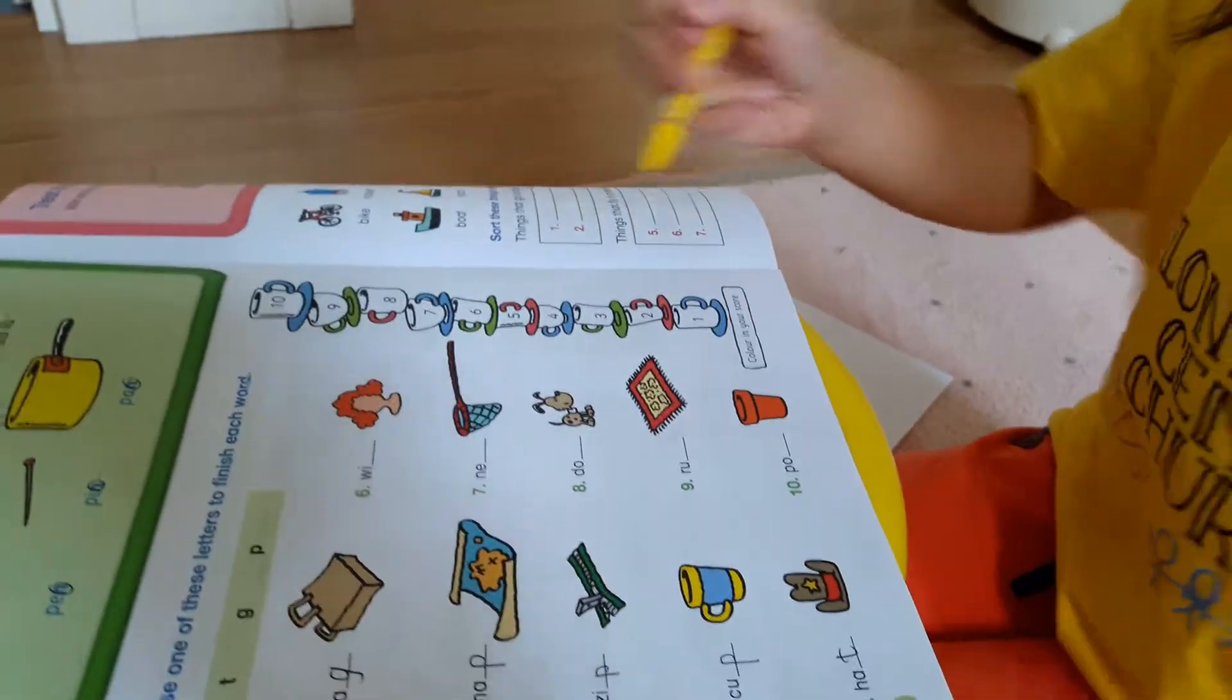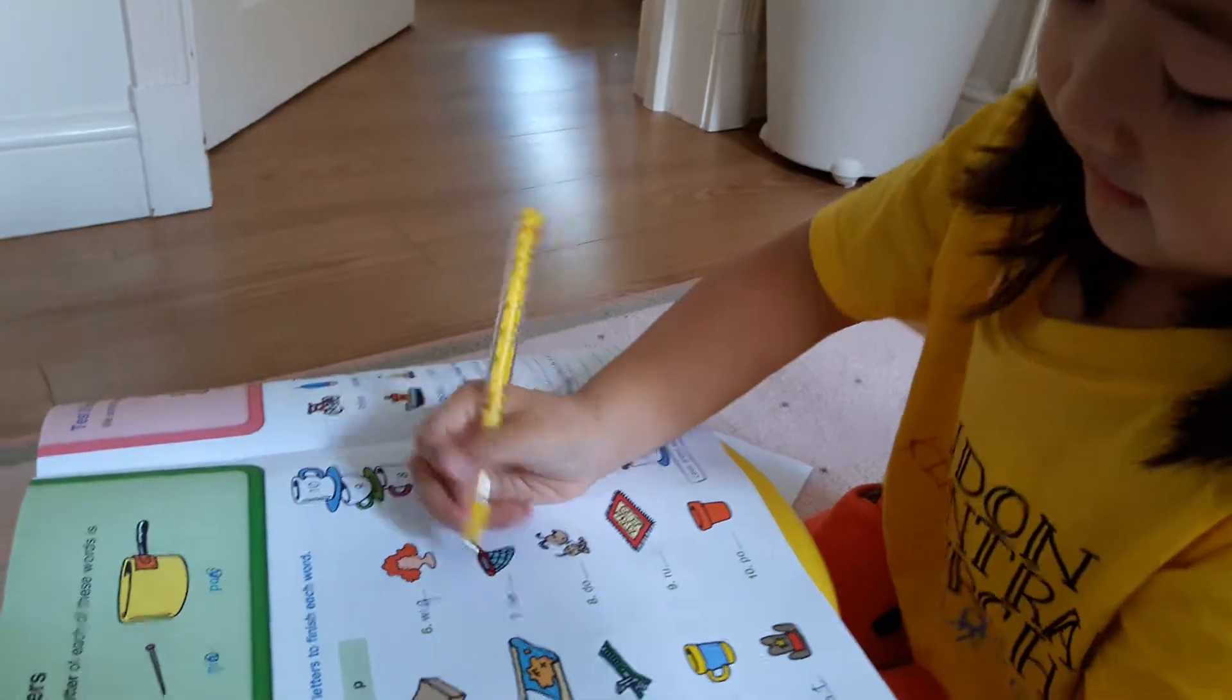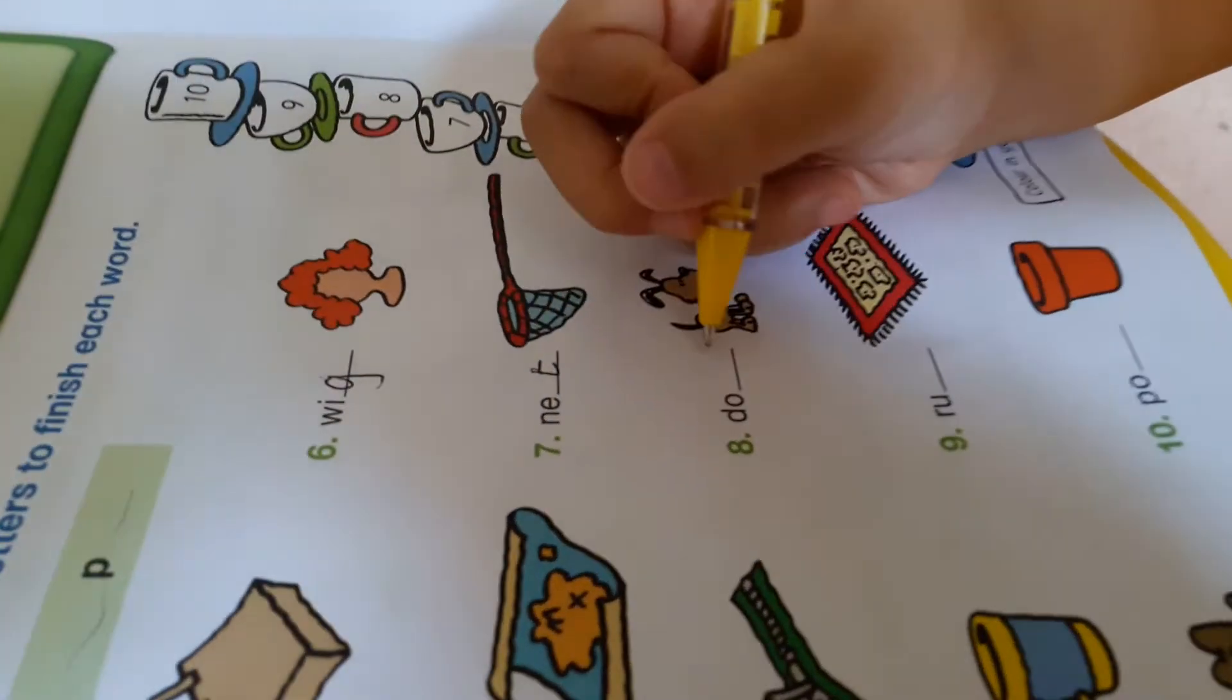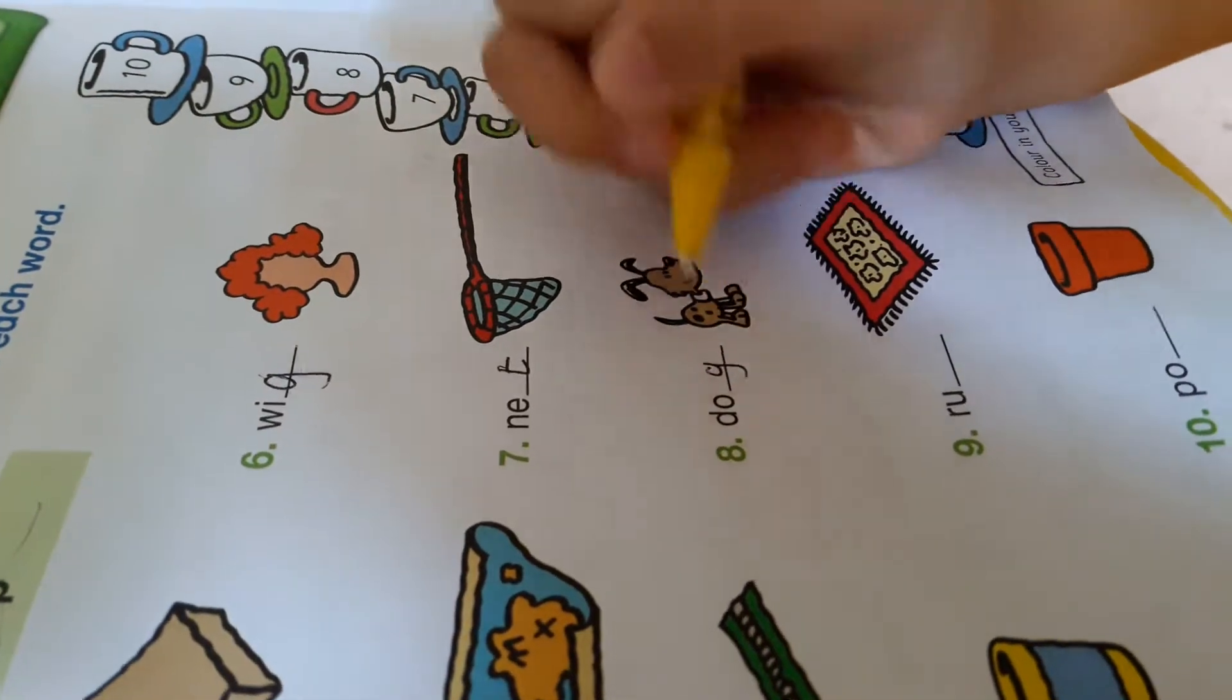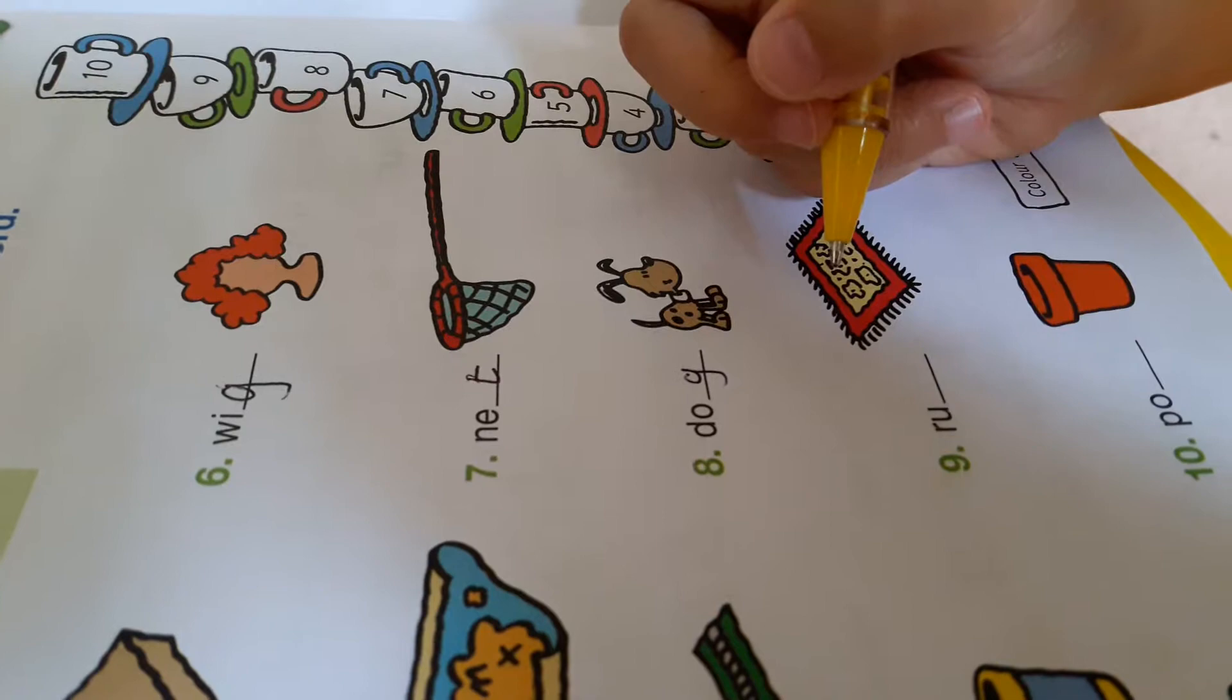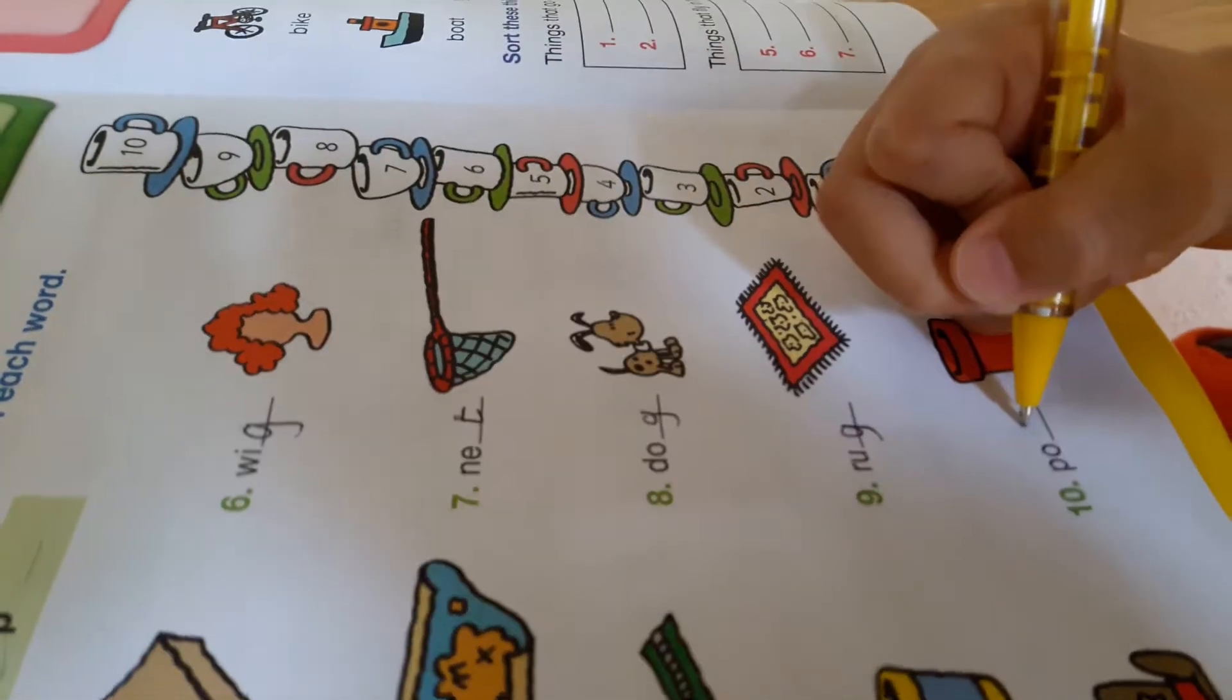Sorry. This is a wig. Yes, a wig. This is a net. This is a dog. This is a rug, probably. A rug. And this is a pot.